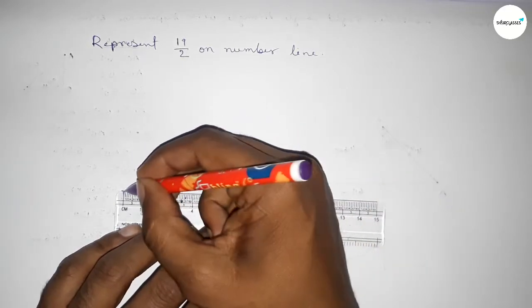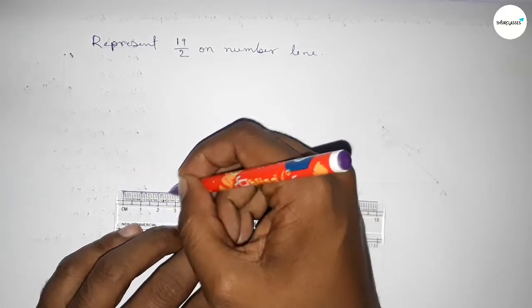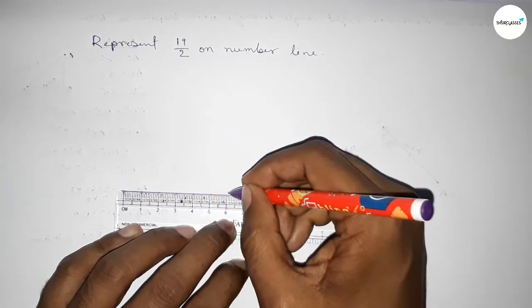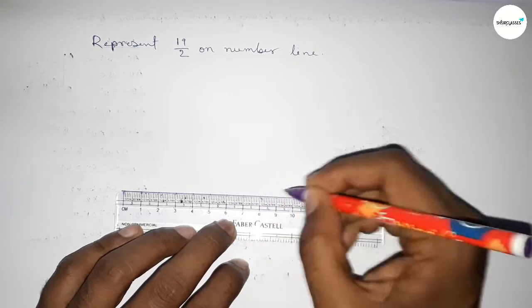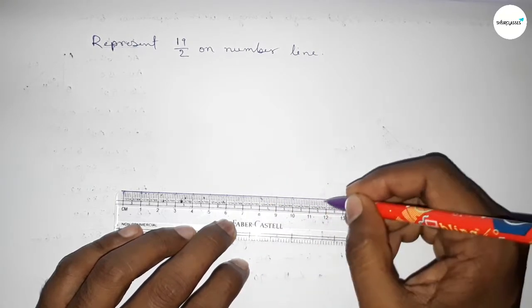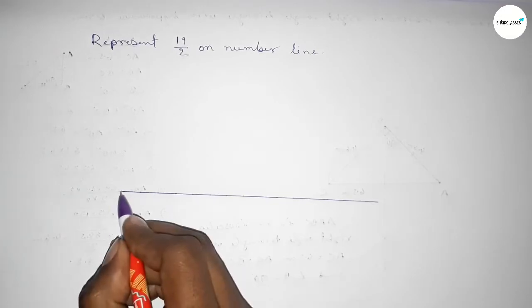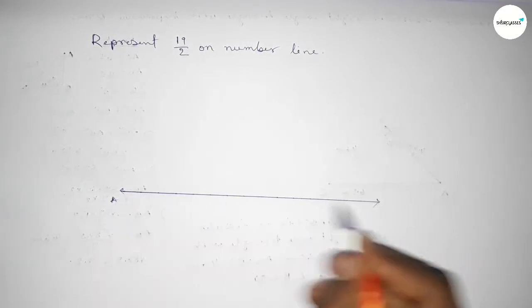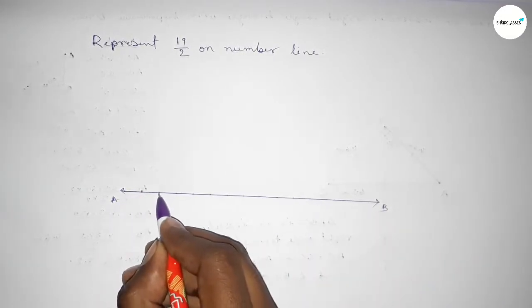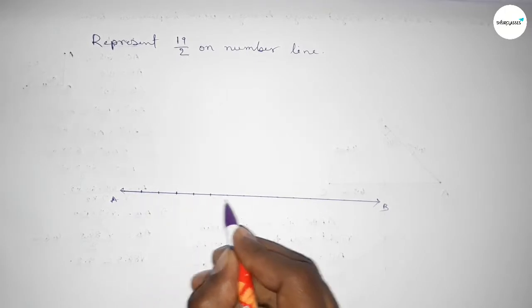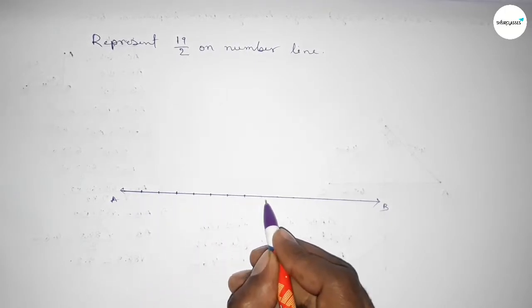Then marking the numbers on the line by using scale. Next, taking arrow marks on both sides and taking AB. Now mark the numbers with deep color to understand perfectly.